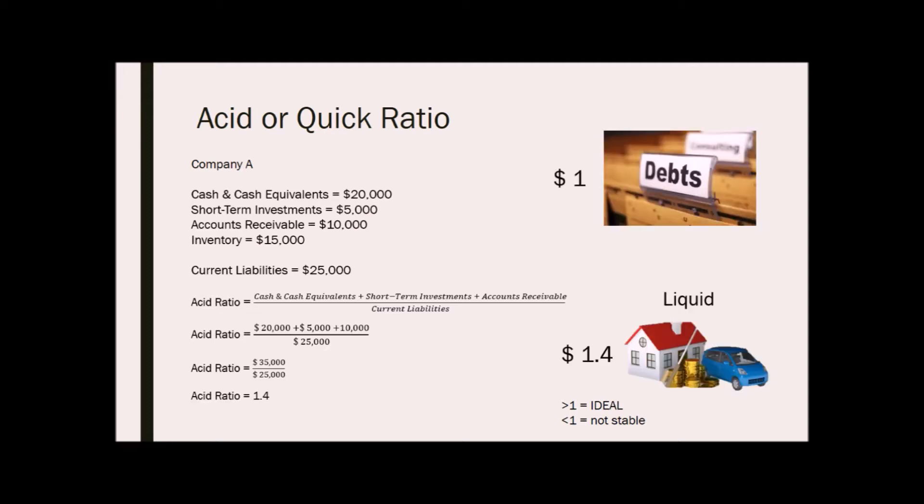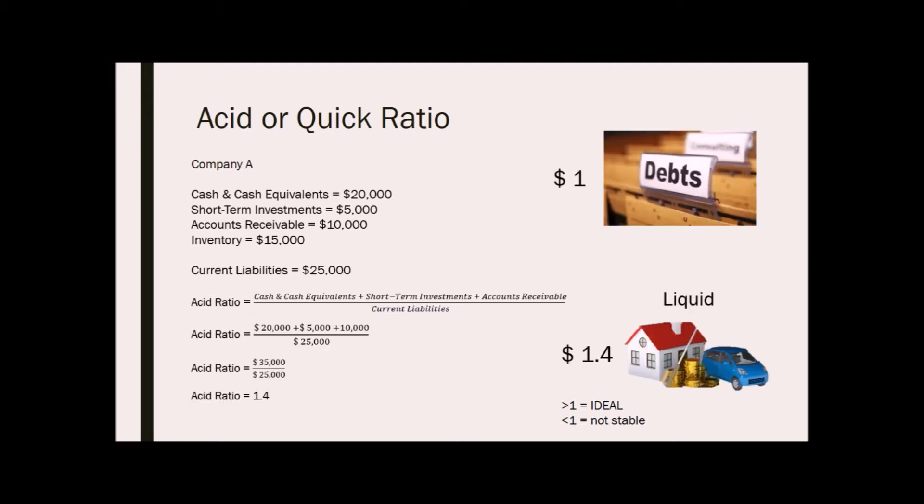Therefore, we will get an acid ratio of 1.4, meaning that for every $1 of current liabilities, it has $1.4 of liquid assets. If the value of the acid ratio is less than 1, then it is said that the company is not stable and may face difficulty in paying off their debts. But if the company has more than 1, this means that they have enough liquid assets to finance their current liabilities. In this case, company A will be able to pay 1.4 times of their current liabilities with their liquid assets.